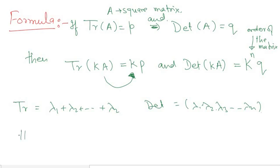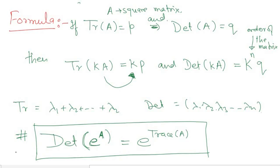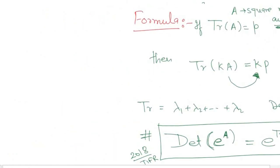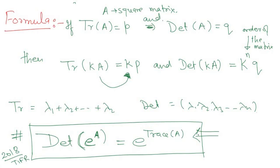One more important formula: what is the determinant of the matrix exponential e^A? It equals e raised to the power of the trace of A — that is, det(e^A) = e^(tr A). This is a very important formula; questions based on it have been asked in examinations such as TIFR 2018. If you know matrix A, you can find its trace (sum of diagonal elements or sum of eigenvalues) and directly determine det(e^A).